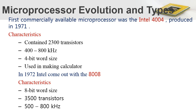The first commercially available microprocessor was the Intel 4004, introduced in 1971. Its characteristics include approximately 2,300 transistors, a clock speed of 400 to 800 kilohertz, and it was a 4-bit processor, meaning it could process 4 bits of information at a time. It was commonly used for making calculators.